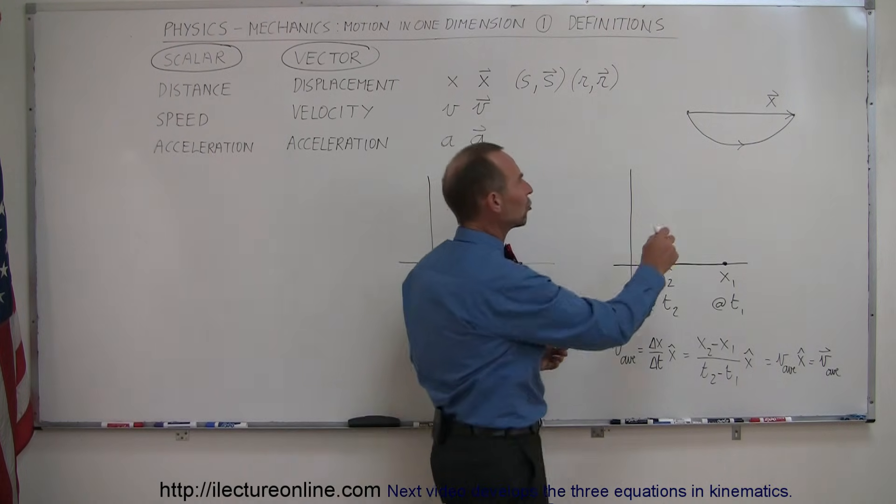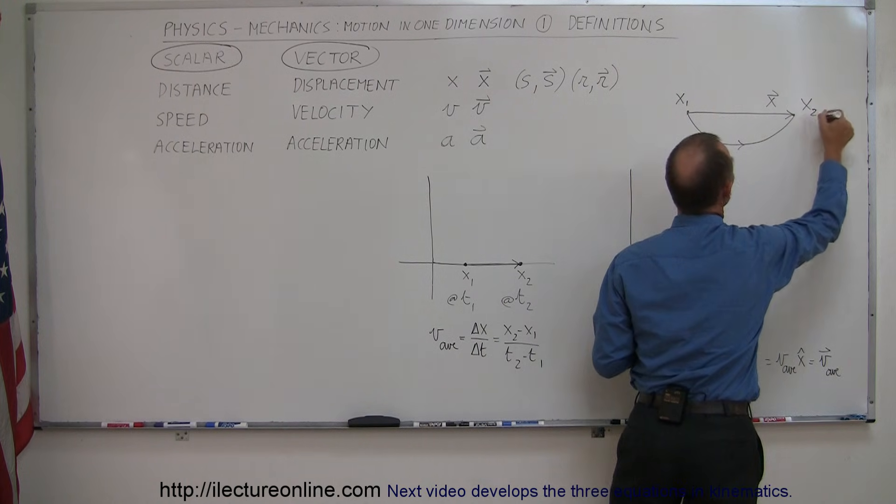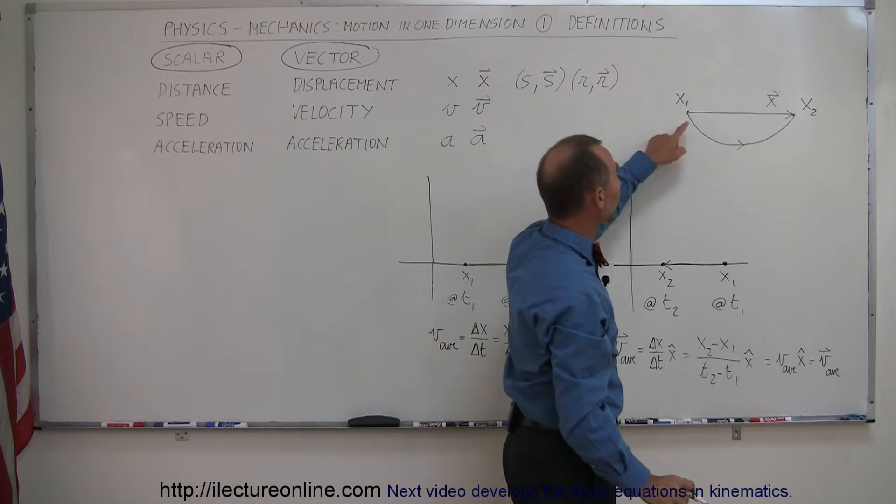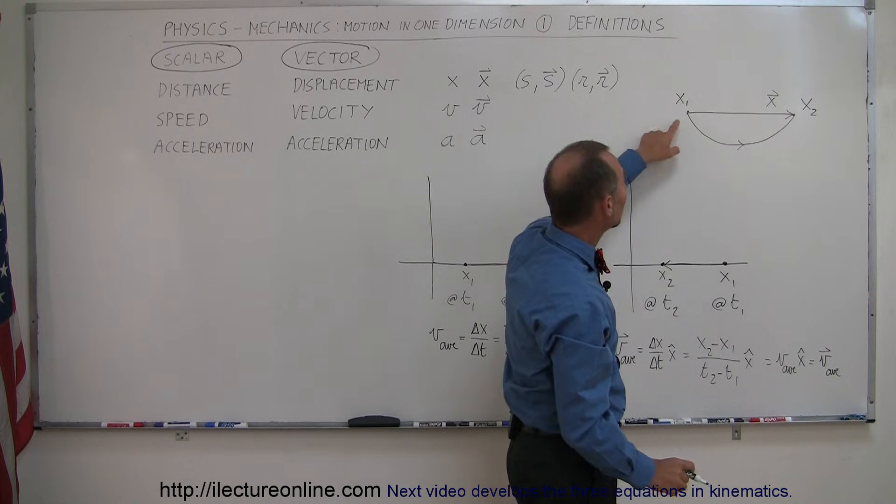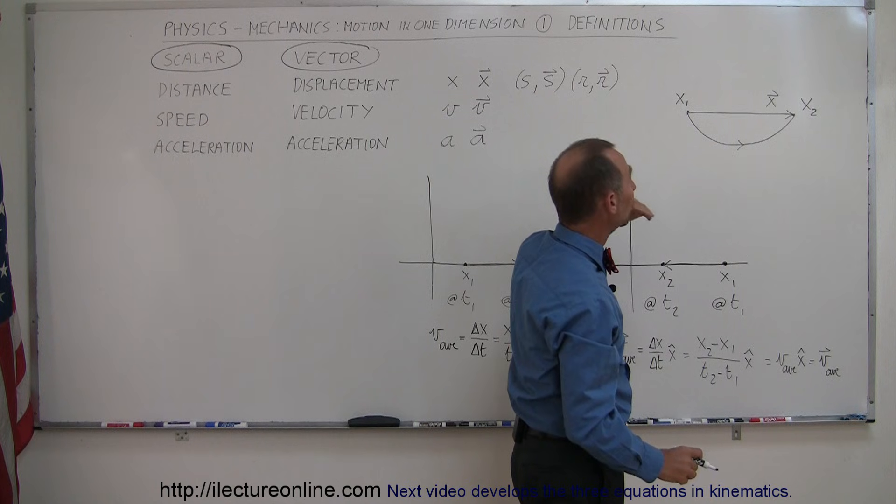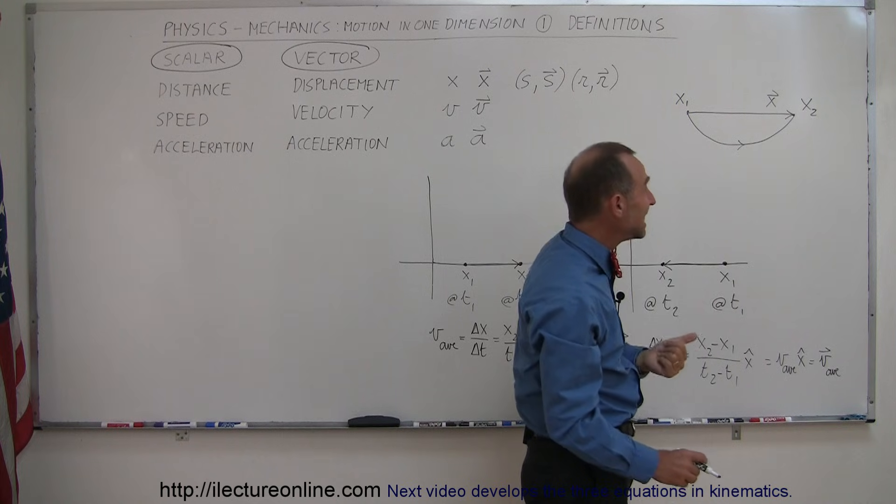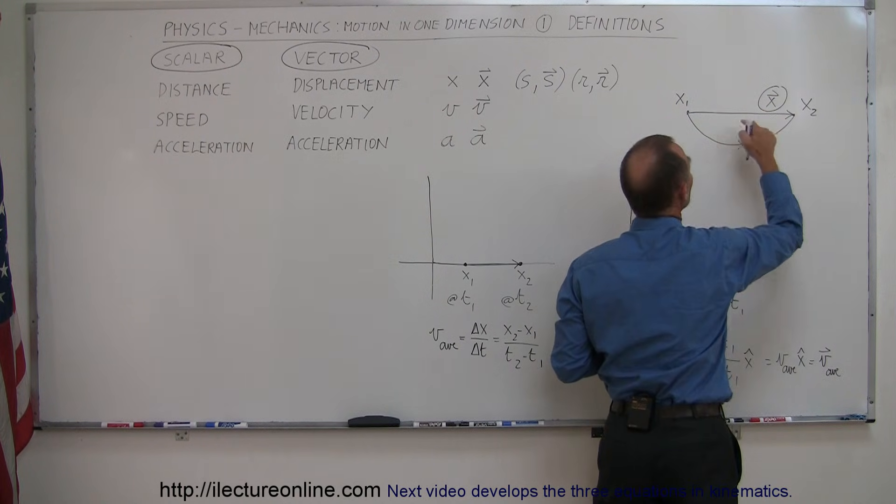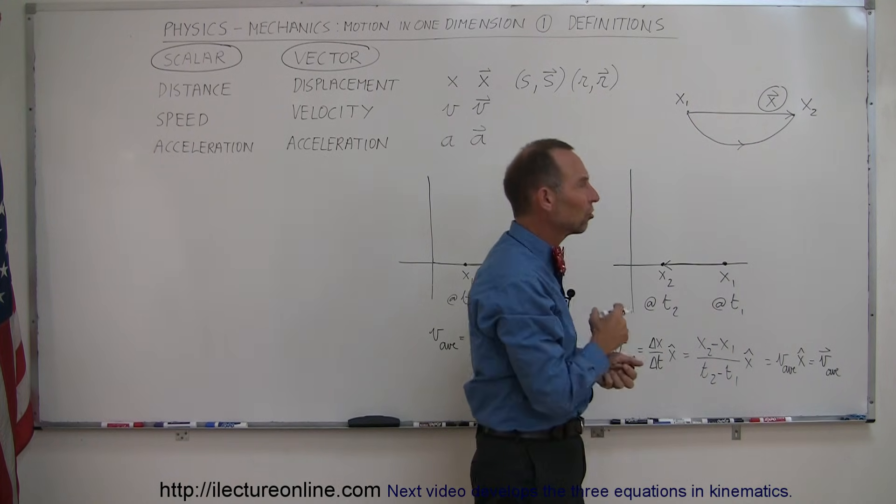So to illustrate that, I have a little drawing right here. Let's say that we start from x1, and we end up at x2. So how far did a person travel? Well, it depends. What if the person took this path right here? Well, the distance traveled would be the distance you travel along this path. But the displacement is simply the vector quantity from x1 to x2. So it's x2 minus x1 in the positive x direction, indicated by this quantity right here. So the displacement, in this case, is actually less in magnitude than the actual distance traveled.